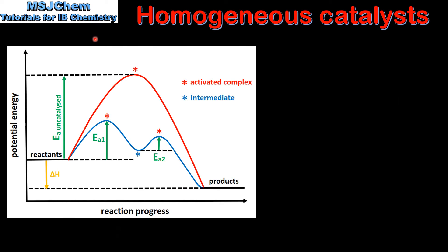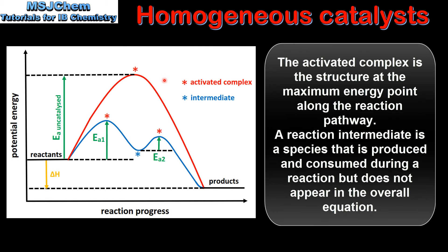Next we look at homogeneous catalysts. Homogeneous catalysts involve the formation of an activated complex or a reaction intermediate. Here we can see an energy level profile for a catalyzed and uncatalyzed reaction. The red line shows the reaction pathway for an uncatalyzed reaction, and the blue line shows the reaction pathway for a catalyzed reaction.